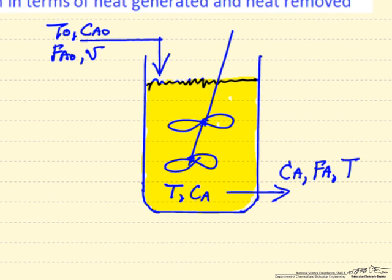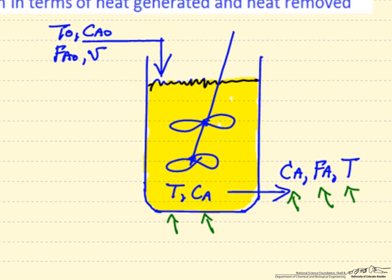In this drawing we have inlet conditions to the reactor: temperature, reactant concentration, molar flow rate, and volumetric flow rate. We are looking at a liquid phase reaction, so we will assume the volumetric flow rate does not change. At the outlet the temperature will be different, the molar flow rate of A will be lower, and the concentration will be lower. The concentration in the reactor is the same as at the exit, and the temperature in the reactor is the same as at the exit.